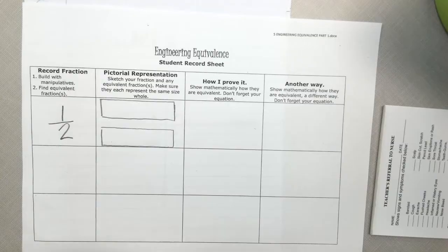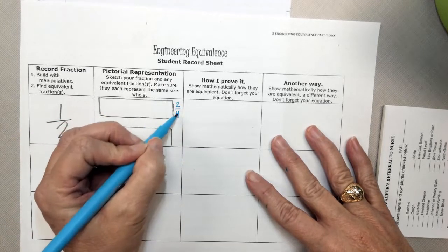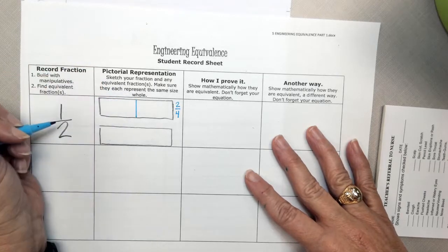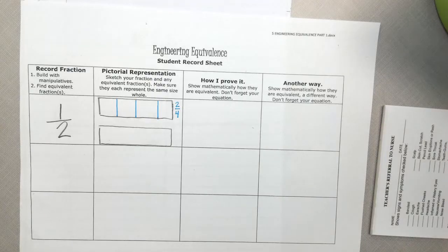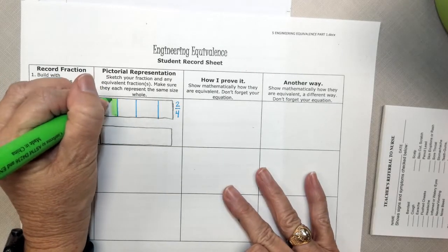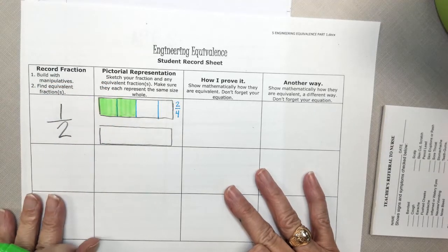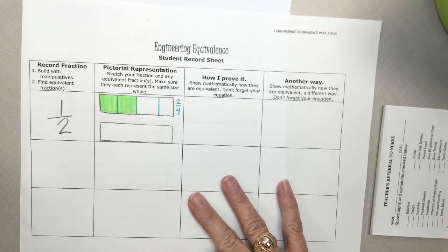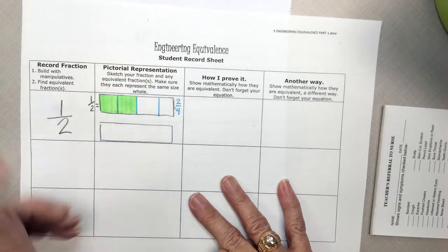And I'm thinking to myself, 2 fourths, 2 is half of 4, so I could draw a picture of that. So I could cut my rectangle in half, and cut each half in half, and then I could take my highlighter and shade in two of the four pieces. And I can look at my rectangle and see that half of my picture is shaded. So is 1 half and 2 fourths, do they equal the same amount? Yes.